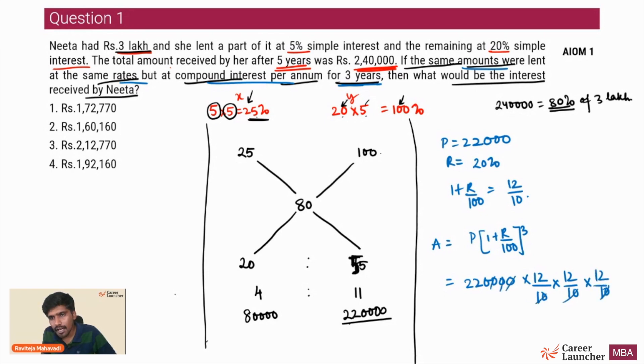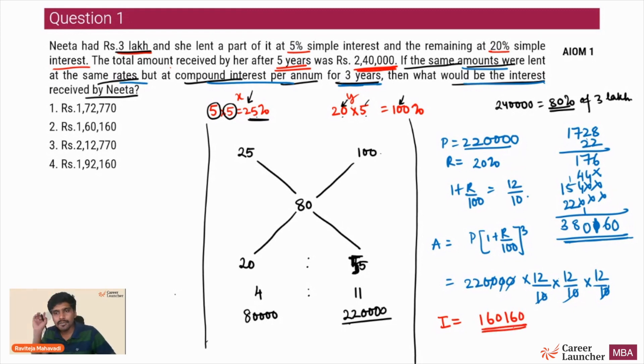Three zeros can be cancelled and we have 220 into 12 cube, which is 1728. So 1728 into 22 - 22 8s are 176, 22 2s are 44, 22 7s are 154, and 22 1s are 22. So what we have here is 3,80,160 as the amount. What is the question asking? What would be the interest? If the amount is 3,80,160 over a principle of 2,20,000, the interest I have earned here is 1,60,160 rupees. The interest earned in the second scheme is 1,60,160. So the answer has to be greater than 1,60,160, which is there in option 2.